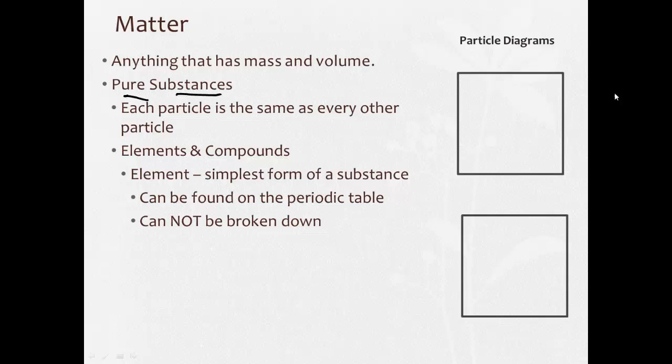A very important thing we're going to spend some time with this year is what's called particle diagrams. The particle diagram for an element is basically just going to be one circle by itself, but they can be grouped like this. Notice none of these are touching. This is the particle diagram for an element where each particle is identical to every other particle. The two basic ways of drawing an element is either going to usually be an open circle or a colored in circle. This would be one element, and this would be another element.